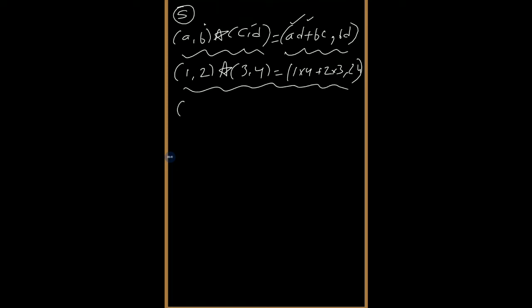So what happens here? If we operate (a, b) with an element and we get the same result (a, b), then this is called the identity element.